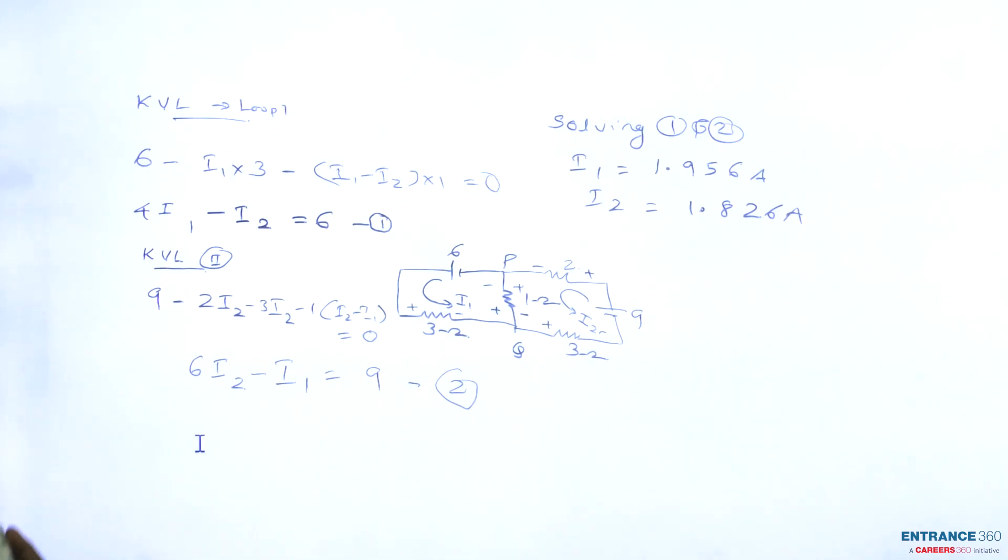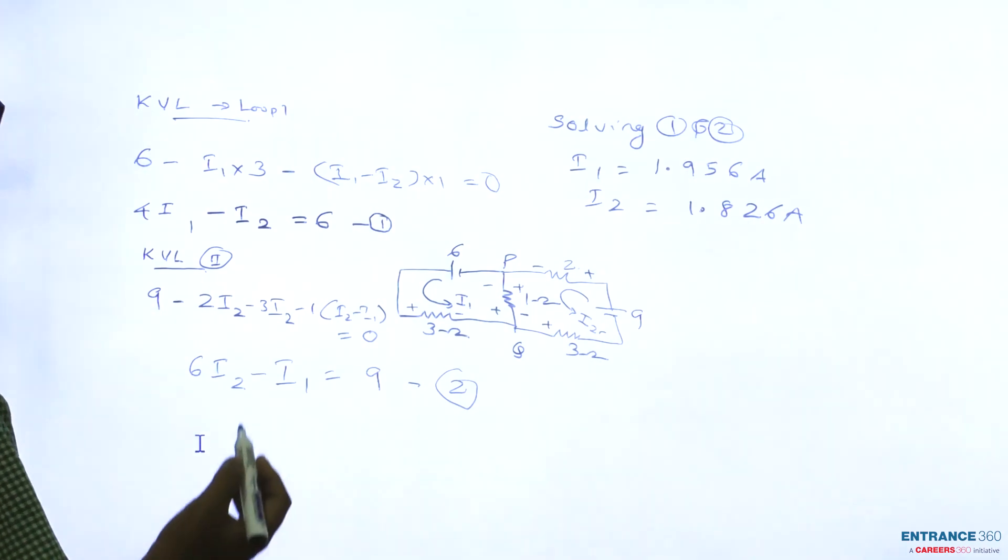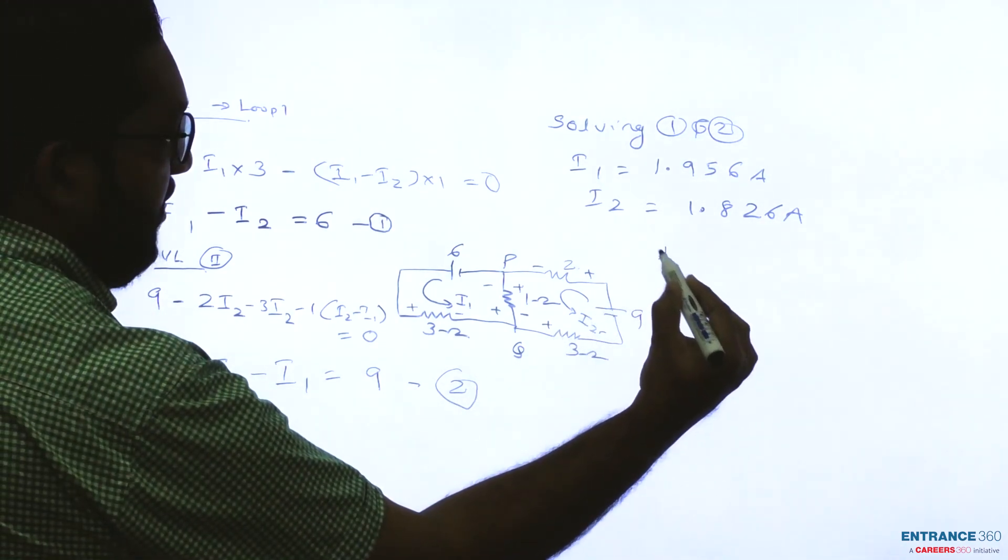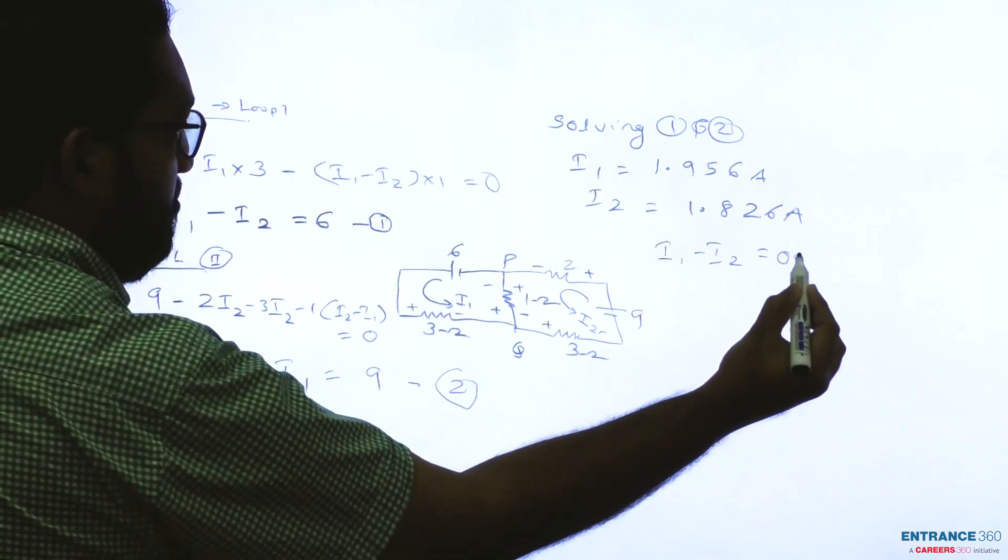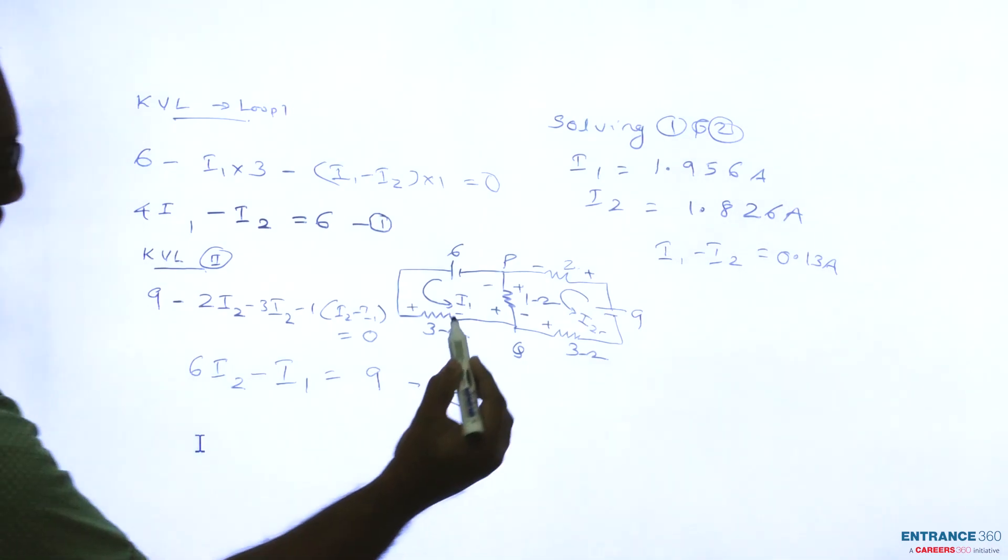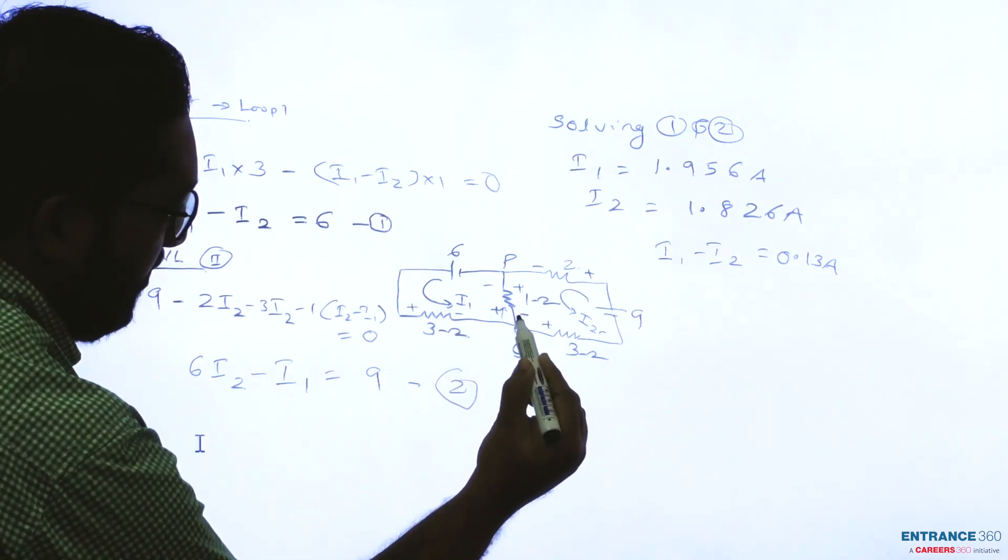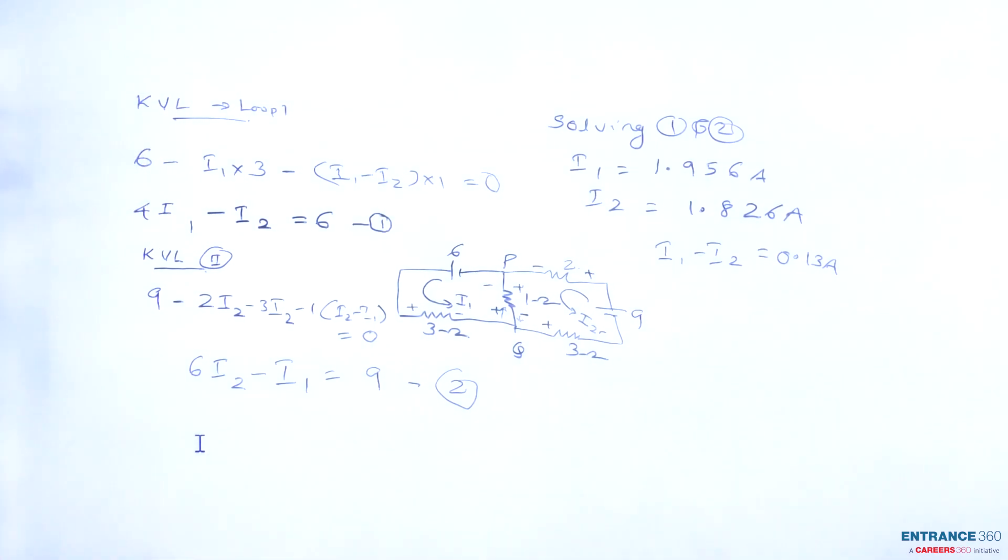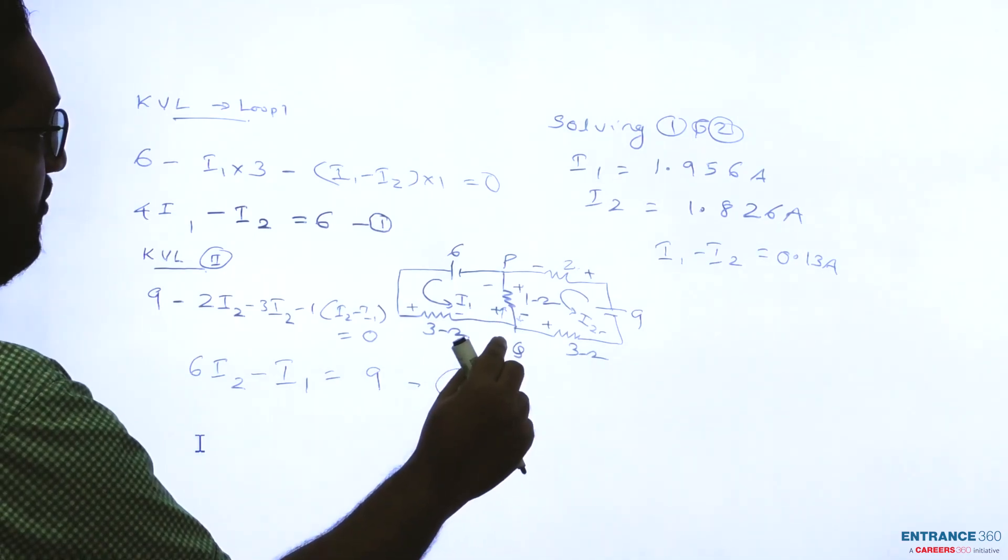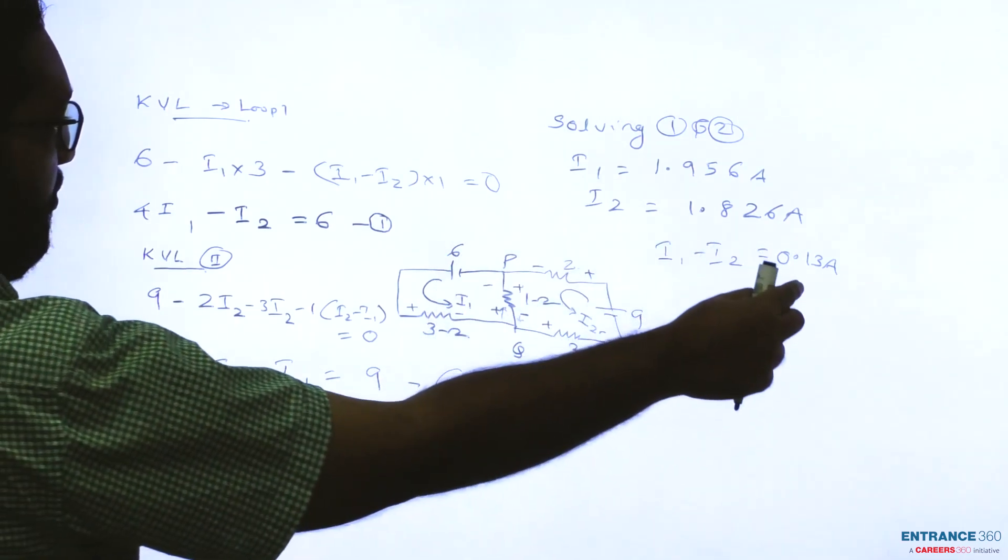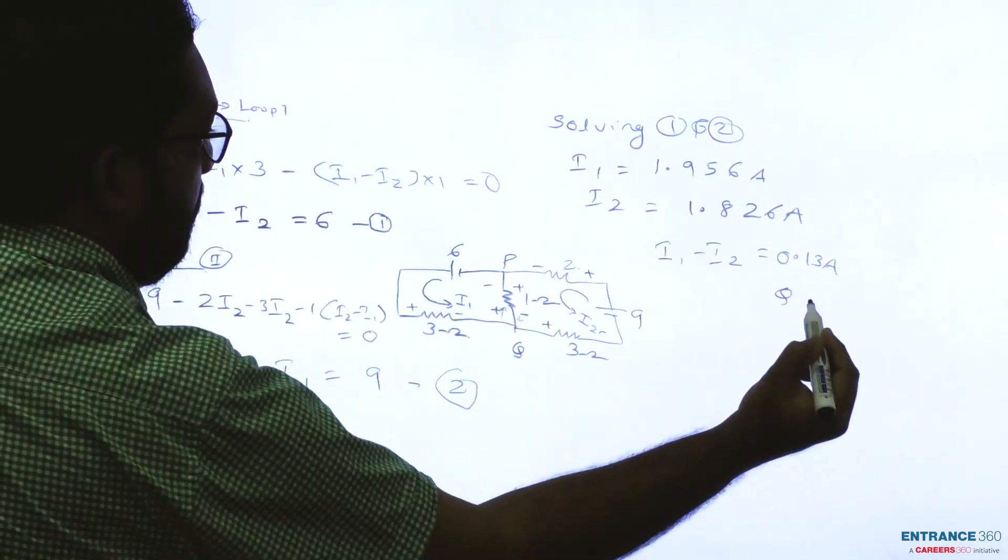Now, current flowing through PQ. We have to find current flowing through PQ. Let's say I1 minus I2 equal to 0.13 ampere. See, I1 is flowing in this direction and I2 is flowing in this direction. So I1 minus I2 is positive. So current will flow from Q to P. That is 0.13 ampere from Q to P.